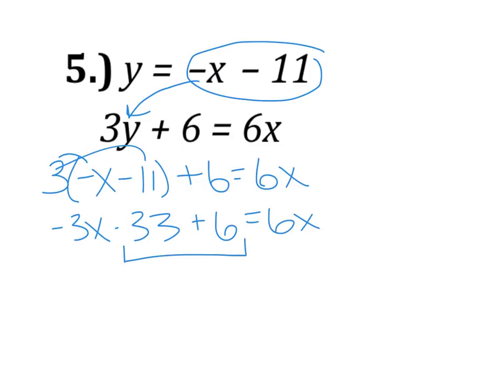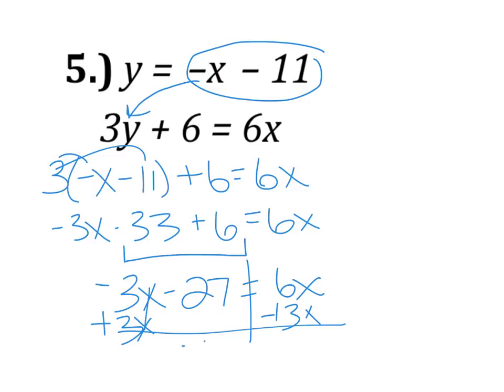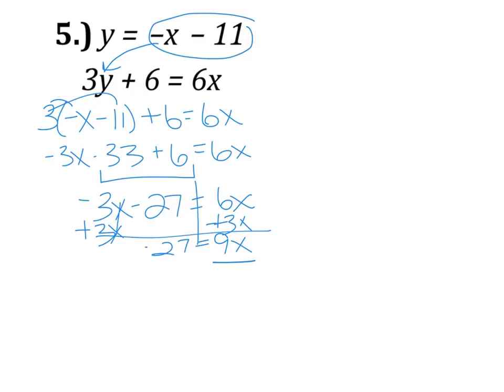We're going to combine like terms. So we have negative 3X minus 27 equals 6X. So we're going to add 3X to both sides. And we have negative 27 equals 9X. So we'll divide both sides by 9 to get X equals negative 3.